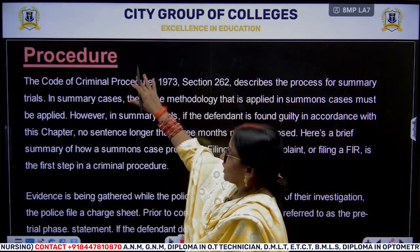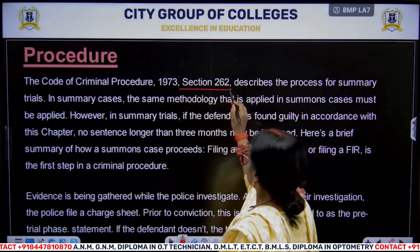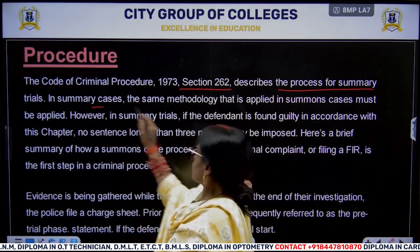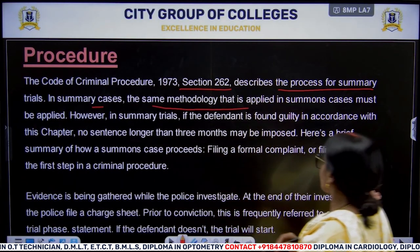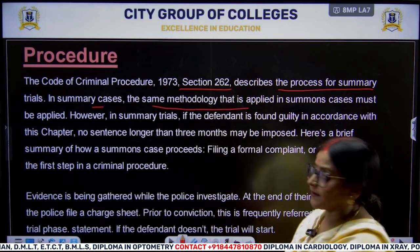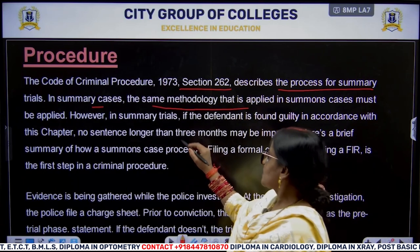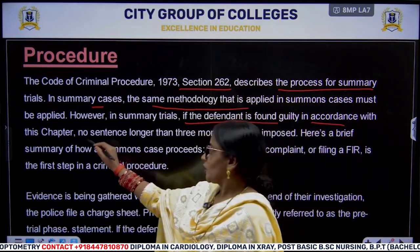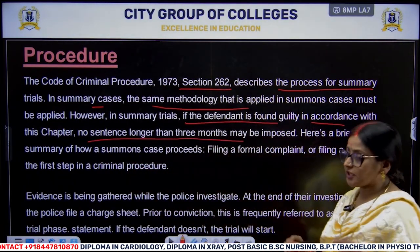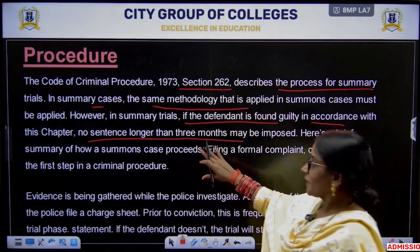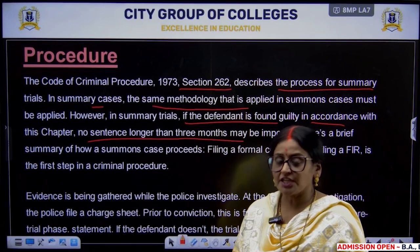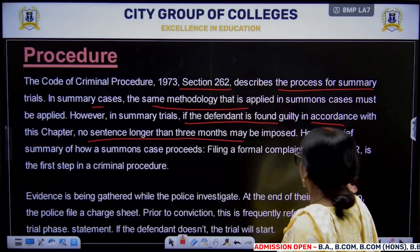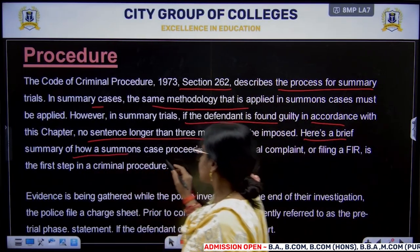What is the procedure? As per Section 262, it describes the process for summary trials. In these cases, the same methodology that is applied in summoned cases must be applied. However, in summary trials, if the defendant is found guilty in accordance with the chapter, no sentence longer than 3 months shall be imposed. So, in summary trial, whenever punishment is given, it cannot exceed 3 months.